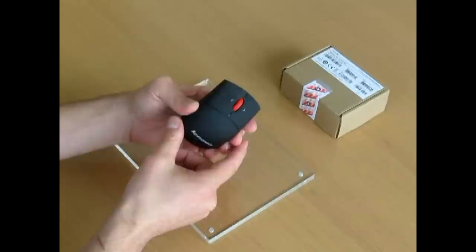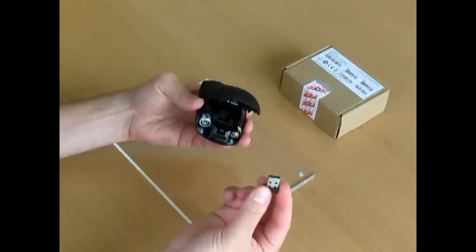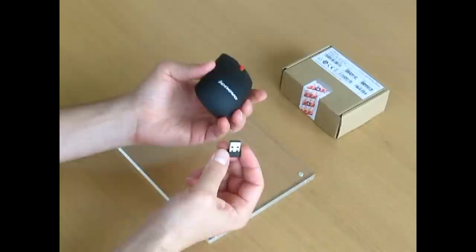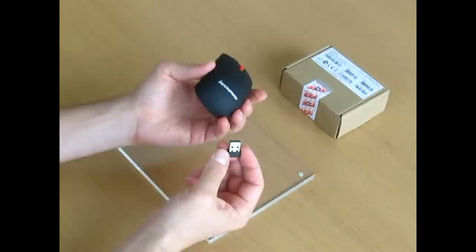You can attach the mouse to your PC and it will start working with the Windows generic driver. However, I do recommend installing the software called Lenovo MouseSuit. If you do so, you can tweak some functionality. In the control panel, under the mouse settings, you get a new tab called Lenovo, and here you can change the behavior of all three buttons as well as the scroll wheel.